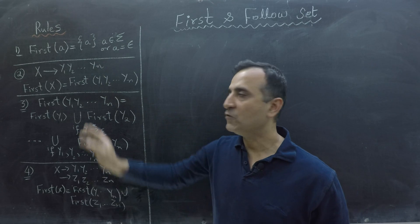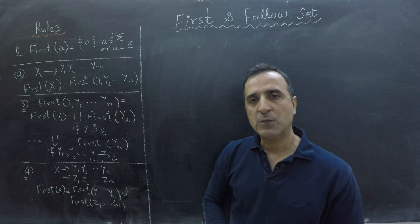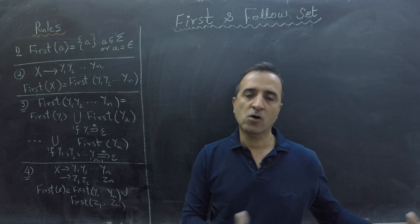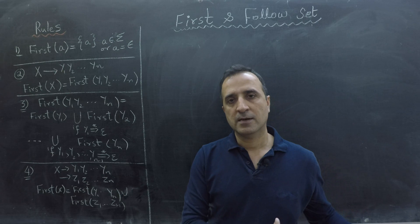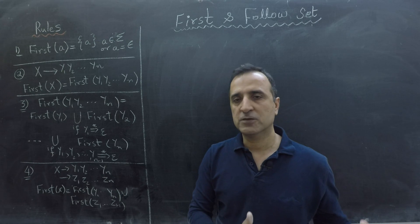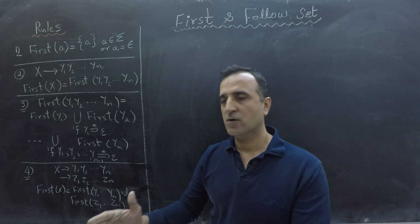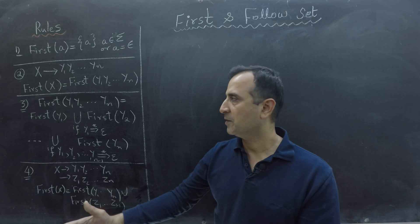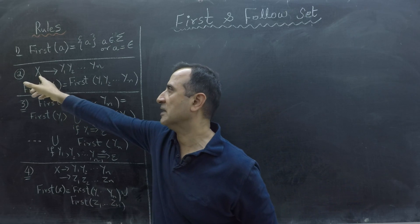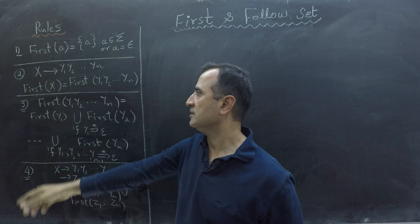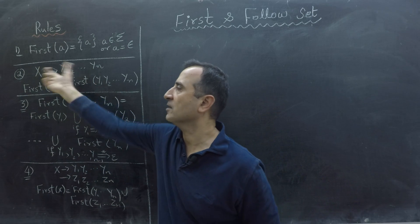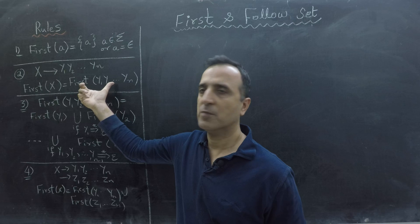Rule number two says that if we are computing First of a non-terminal, then that First is equal to the First of the right-hand side of that non-terminal. So First of X, because X is a non-terminal, is equal to the First of whatever is on the right-hand side of that non-terminal. That's rule number two.